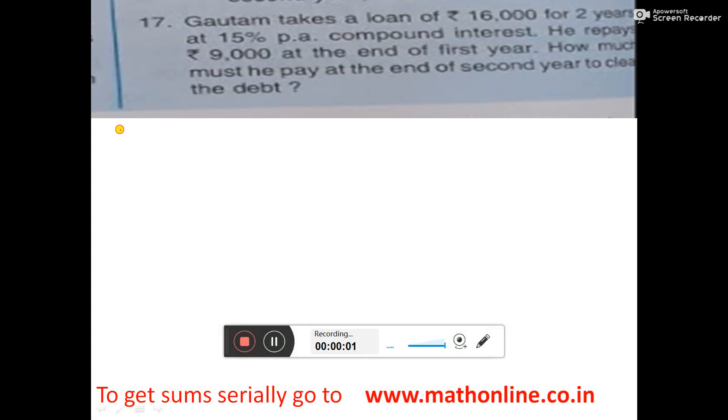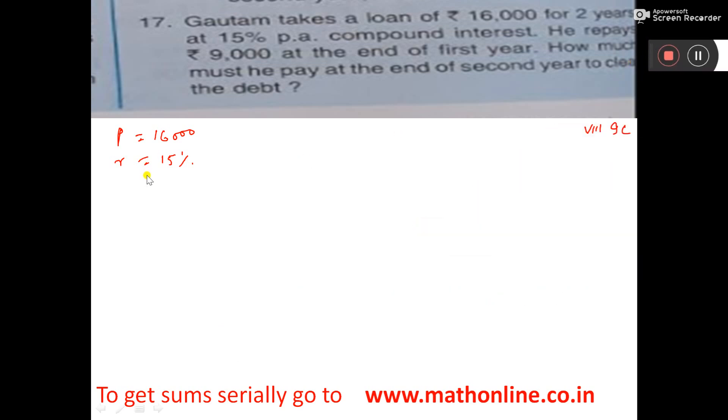P is equal to 16,000, R is equal to 15%. Now amount is equal to P into 1 plus R by 100 whole to the power 1.